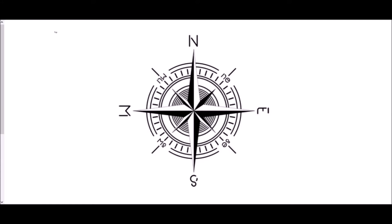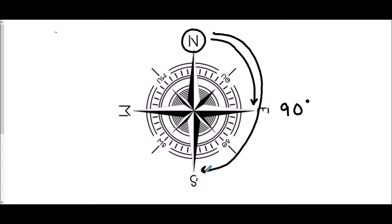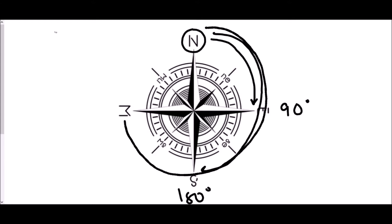We're going to begin this video with the compass, and the reason we're doing that is that bearings are all to do with navigation, which is done using a compass. All of the different directions are based around north. From north to east, if we wanted to turn, we would turn 90 degrees — a right angle — so east can be classed as 90 degrees. From north to south would be turning half a turn, so 180 degrees. Continuing clockwise to west would be another 90 degrees, putting us at 270 degrees.